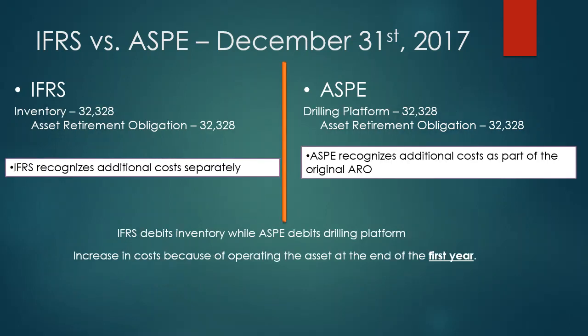The fifth entry at the end of 2017 is the increase in production costs. IFRS recognizes additional costs separately — if something is added onto the original project, IFRS records it on its own. Under ASPE, any addition is recognized as part of the original project. So IFRS debits inventory, recognizing additional oil production as a separate account, while ASPE debits drilling platform. Both credit asset retirement obligation for $32,328.